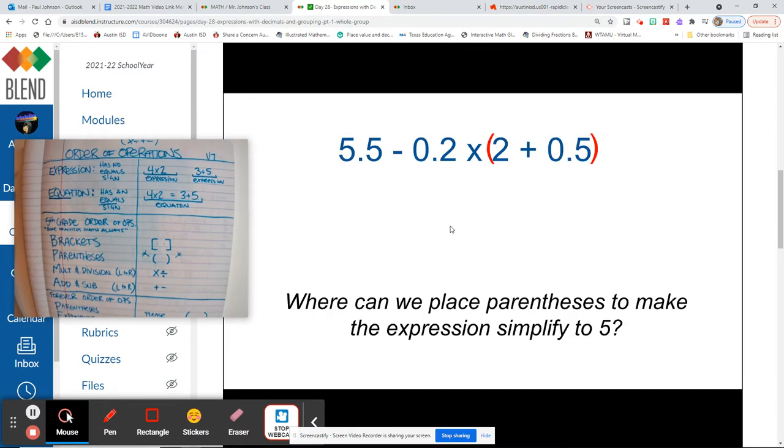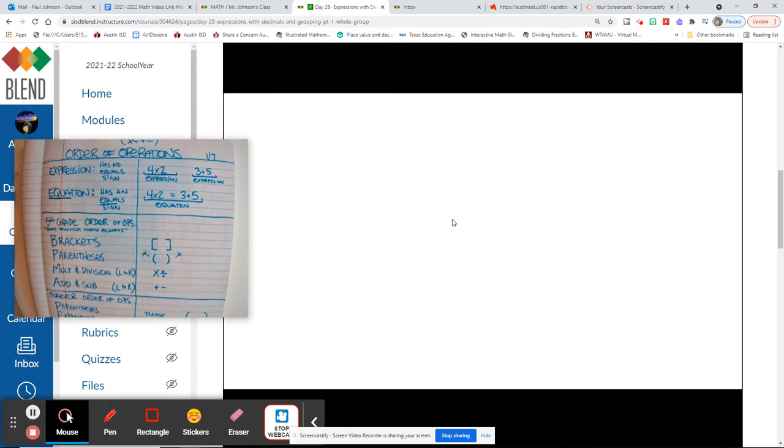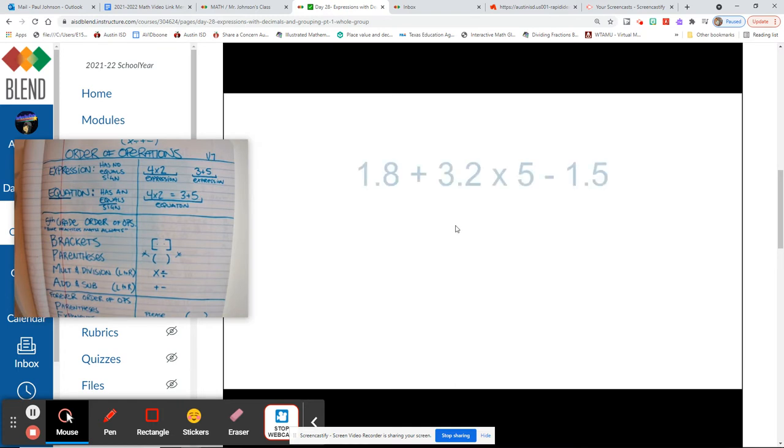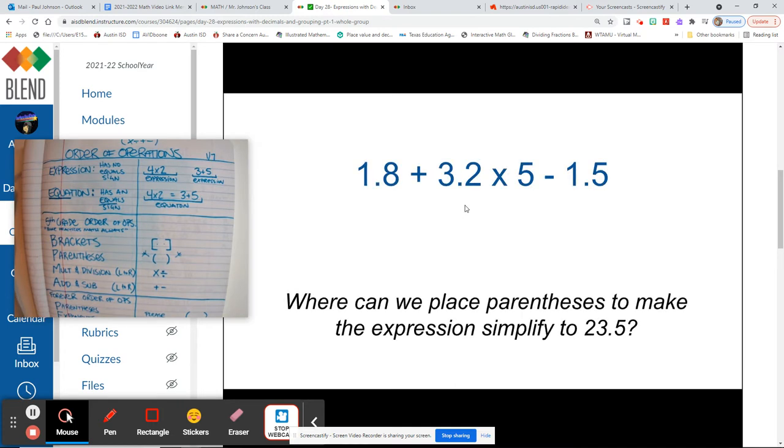Alright, let's check out the next one. I think there's one more. So where can we place the parentheses to make the expression simplify to 23 and 5 tenths?